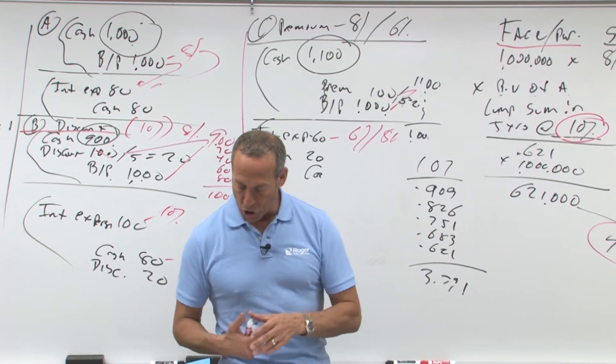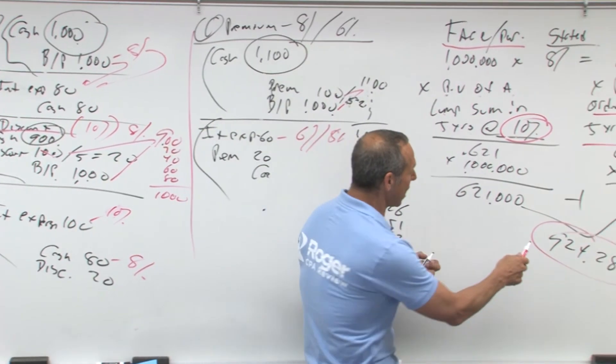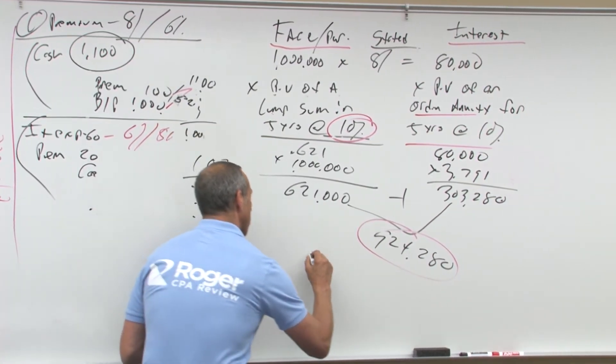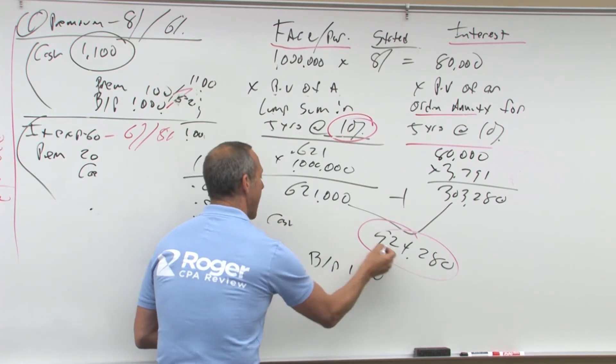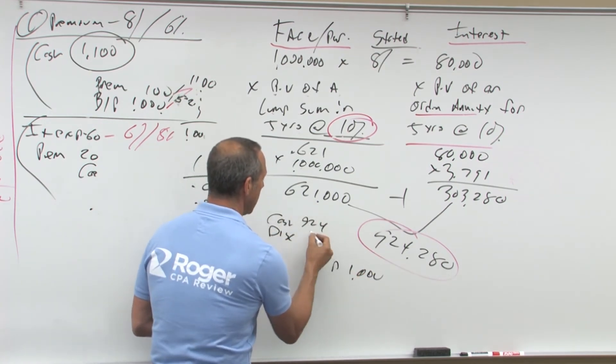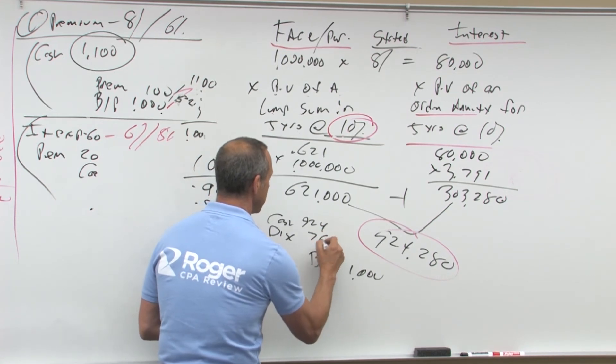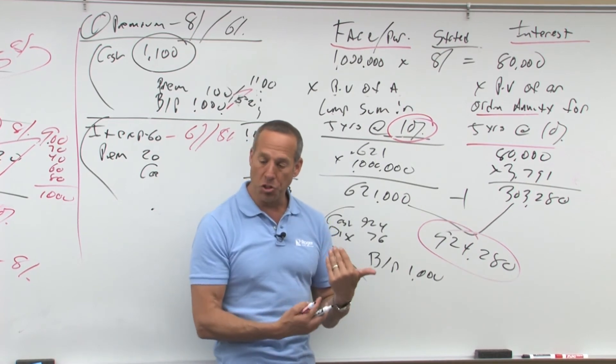Then you'll see on the next page the journal entry, which we're rounding to 924 just to make my life easy. So what's the journal entry based on what we learned? Credit bonds payable, always for face, debit cash, 924, difference is your discount, which is what? In this case is 76.